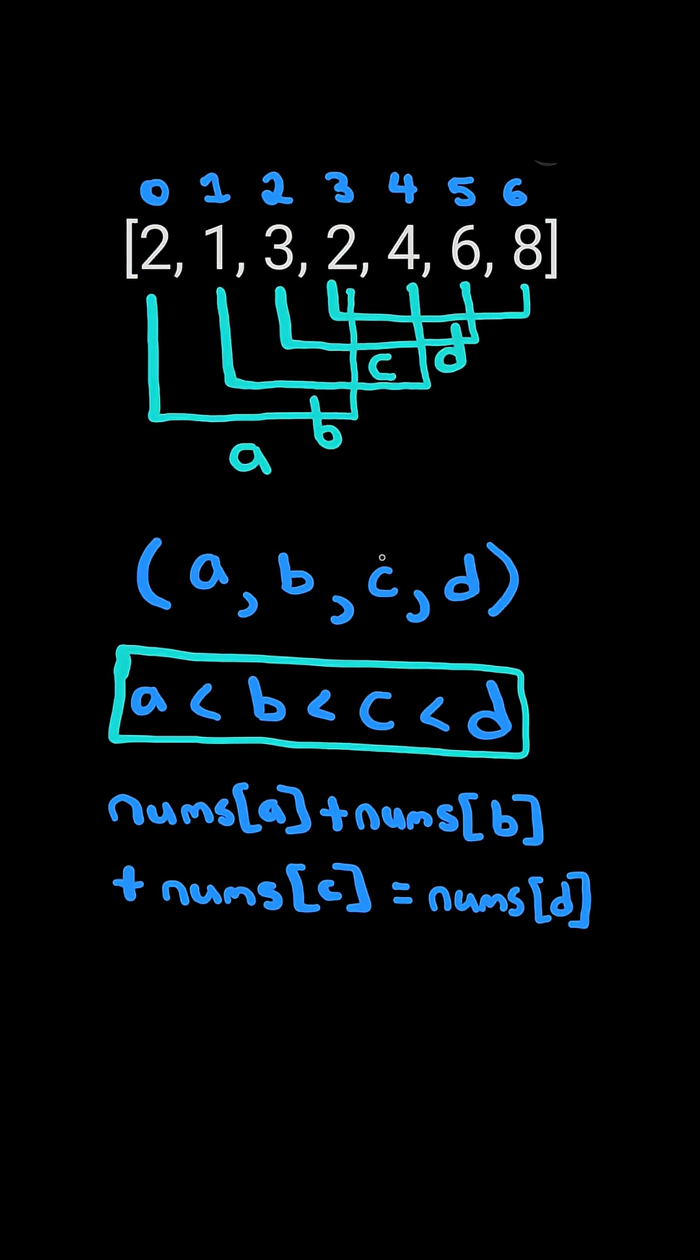This structure ensures that the quadruplet indices maintain an increasing order. We can check if the sum of the values at a, b, and c equals d.